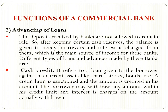Now we will go through the advancing of loans. The deposits accepted by the bank are put to use for their earnings. The deposits received by the bank are not allowed to remain idle. So after keeping certain cash reserves, the balance is given to needy borrowers and interest is charged from them, which is the main source of income for these commercial banks. There are different types of loans and advances made by these banks: cash credit, demand loans, and short-term loans.